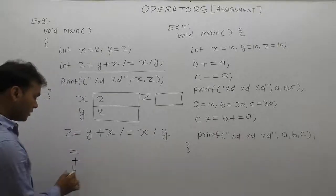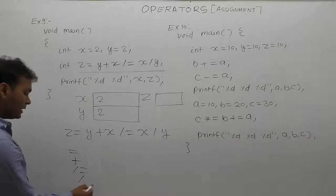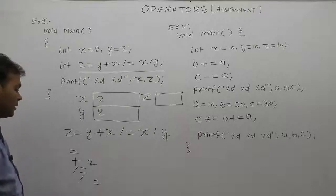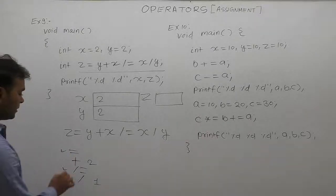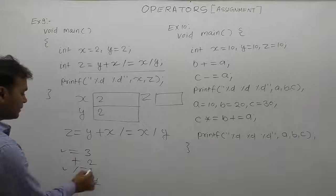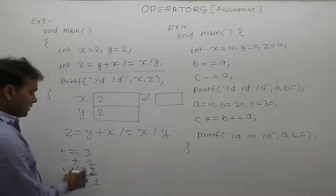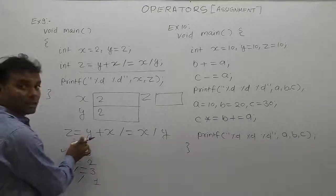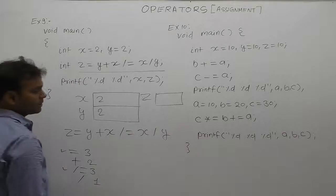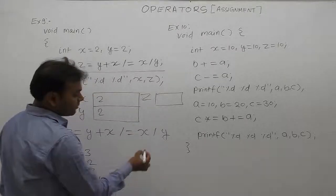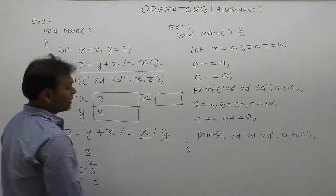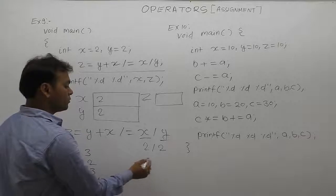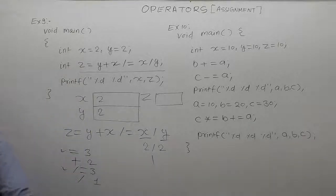The operators are: plus operator, compound assignment, and division. The highest priority is taken by division, next is plus, and third is assignment. Assignment has the same priority level. Since assignment goes right to left, compound assignment comes first, then regular assignment. First of all, the highest priority operation is division: x divided by y, which is 2 divided by 2. The result is 1.